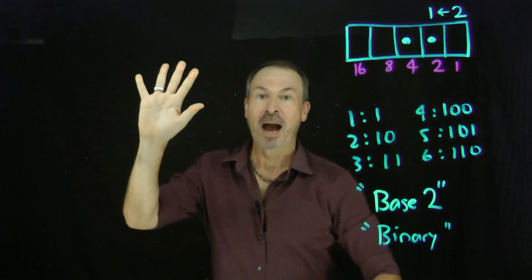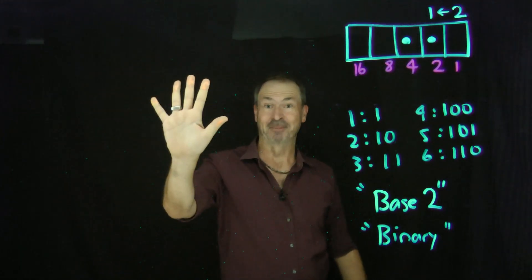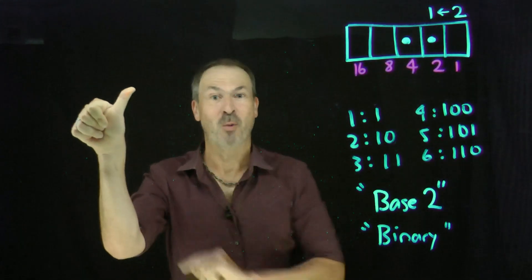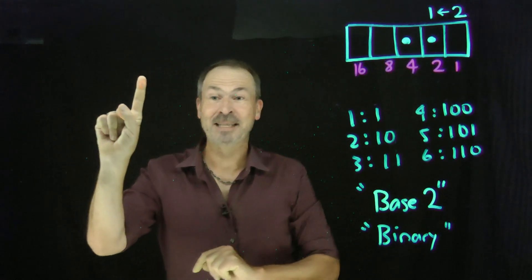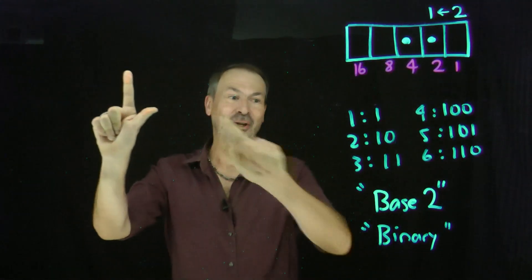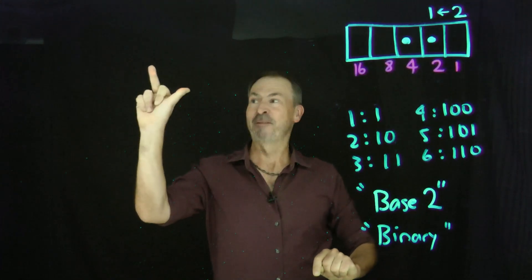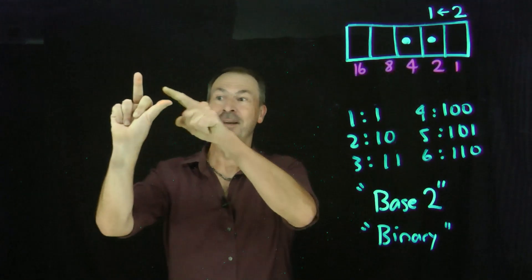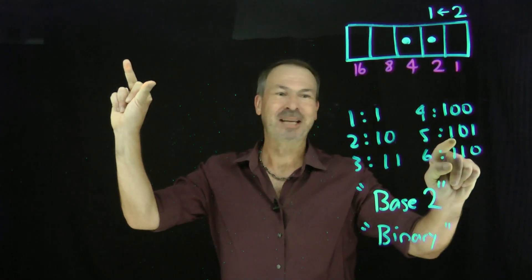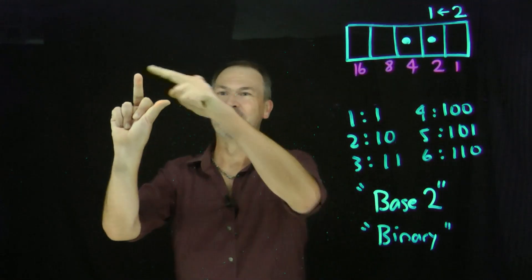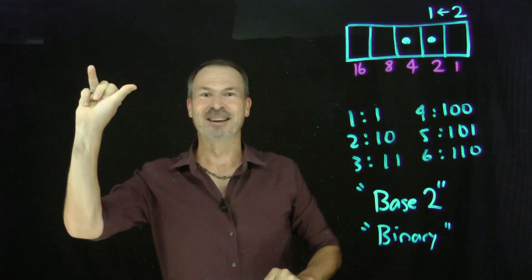This means I have a way to represent lots of numbers on a single hand. Here's the number 1 — just put up the 1. Here's the number 2 — just put up the 2. Here's the number 3 — put up the 1 and the 2. Here's the number 4 — just put up the 4. Here's number 5 — put up the 1, 0, 1. A 1, no 2, and a 4. 1 and 4 is 5. There's 6, there's 7, there's 8, there's 9.